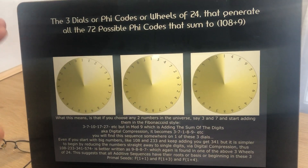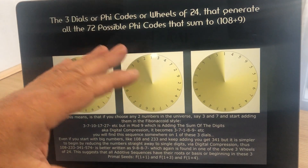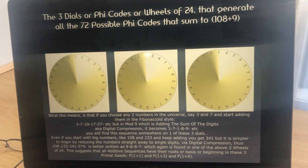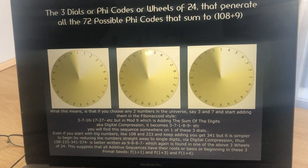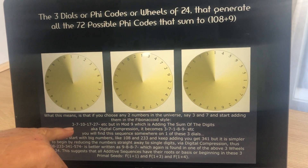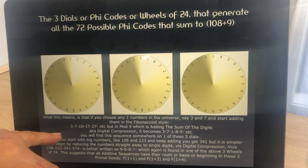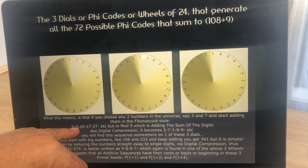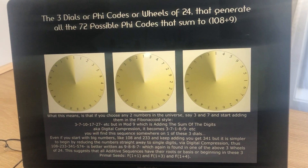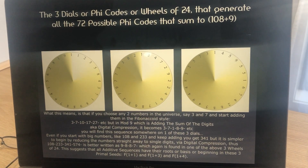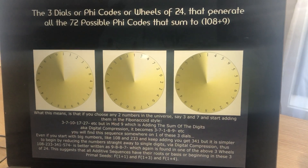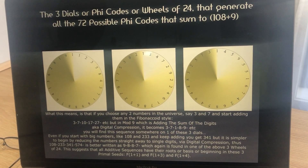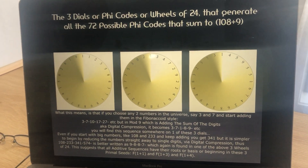Now I'm going to give you an example of what a Phi Code is. I'm going to start off with two numbers. If you chose any two numbers in the universe — like 3 and 7, or 106 and 110 — we're going to add them in a particular way. I'll show you on the board here.